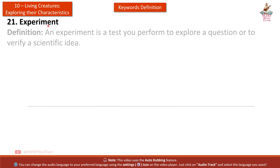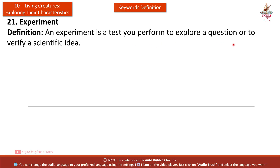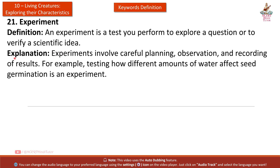Twenty-first: Experiment. Definition: An experiment is a test you perform to explore a question or to verify a scientific idea. Explanation: Experiments involve careful planning, observation, and recording of results. For example, testing how different amounts of water affect seed germination is an experiment.